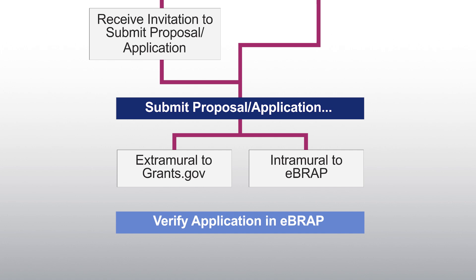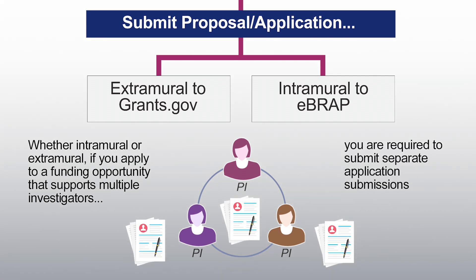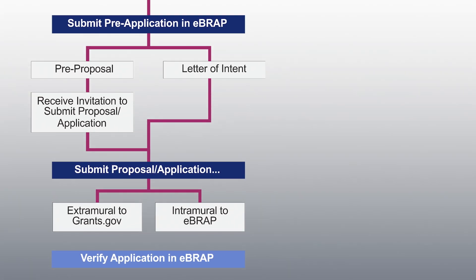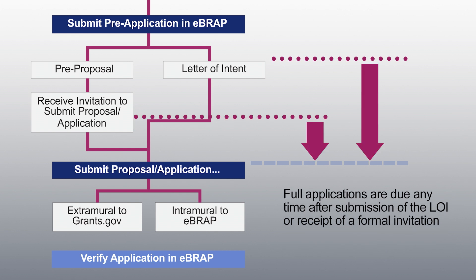Regardless of whether you are an intramural or extramural applicant, if you apply to a funding opportunity that supports multiple partnering principal investigators, you as the initiating PI and your partnering PI or PIs are required to submit separate full application submissions, even if you are located within the same organization. The partnering PI application is an abbreviated package that only includes components required to make a separate award. The same rules apply regarding timelines, with full applications due any time after submission of the LOI or receipt of a formal invitation following screening of pre-proposals, but before the application submission deadline.